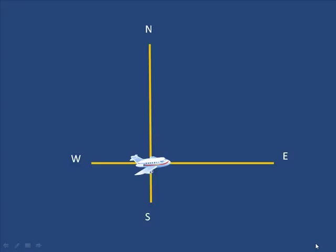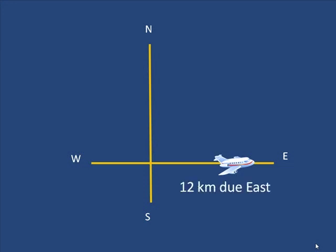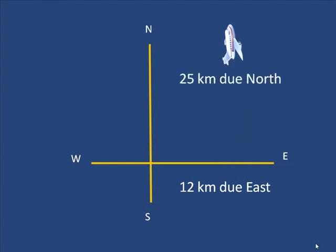Suppose I want to fly due east. And in fact, I fly 12 kilometers due east. The plane turns abruptly and heads north for 25 kilometers due north.